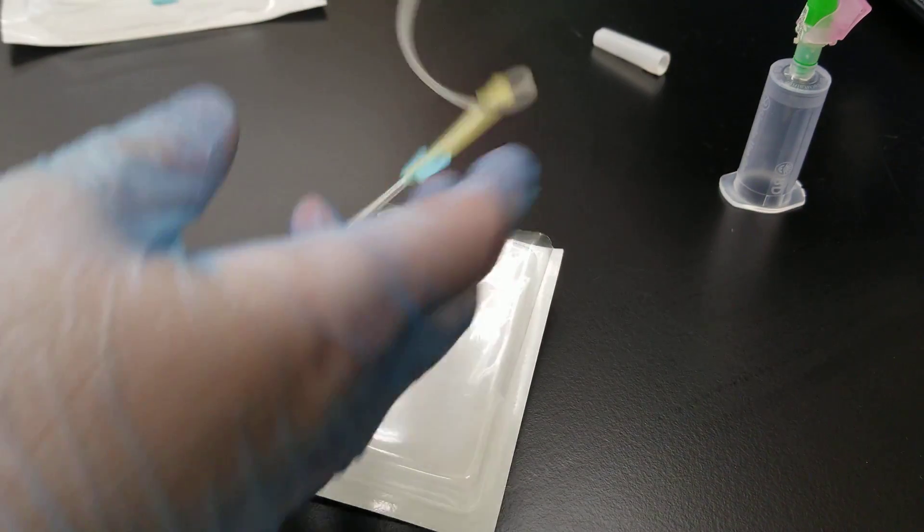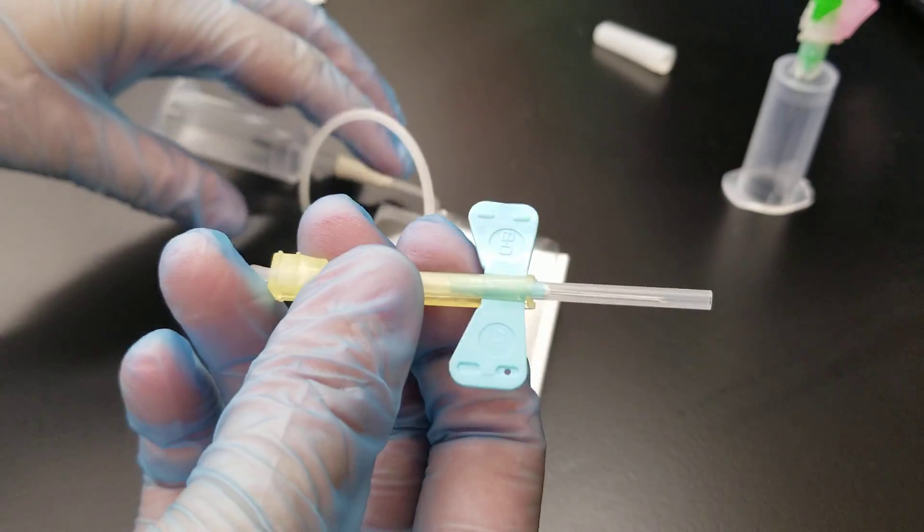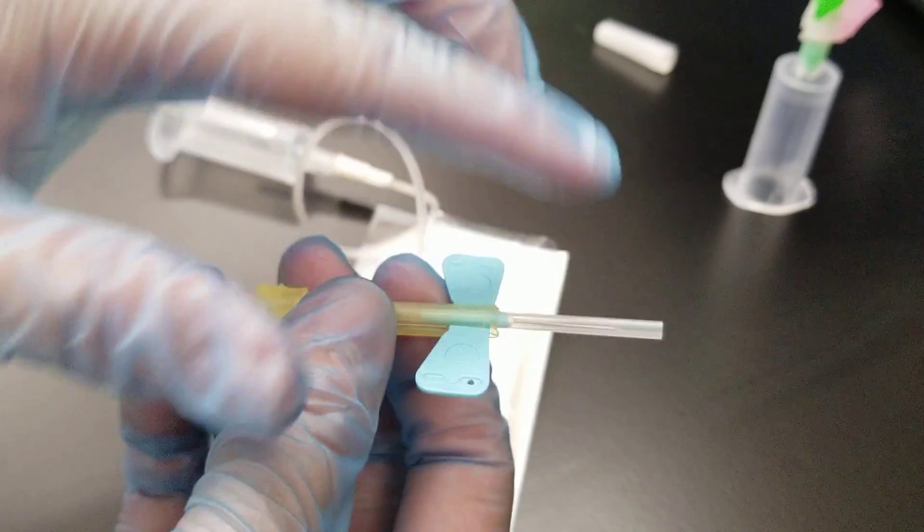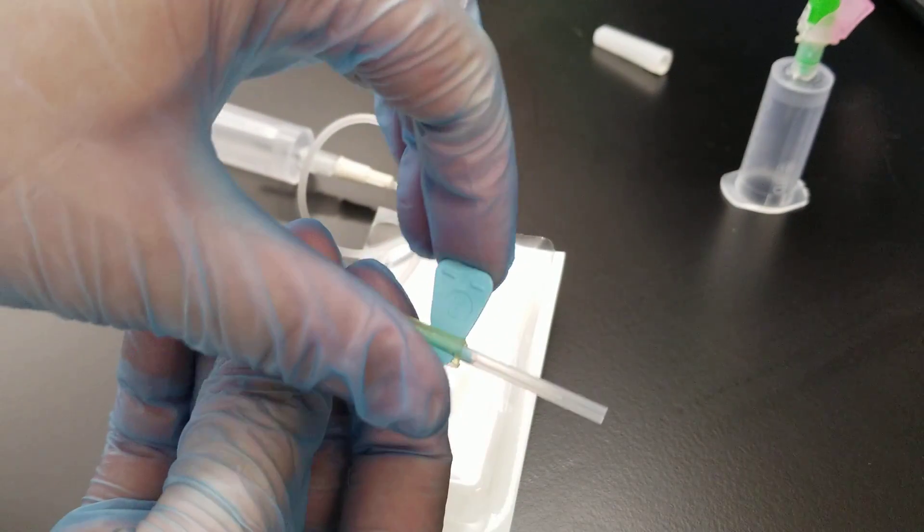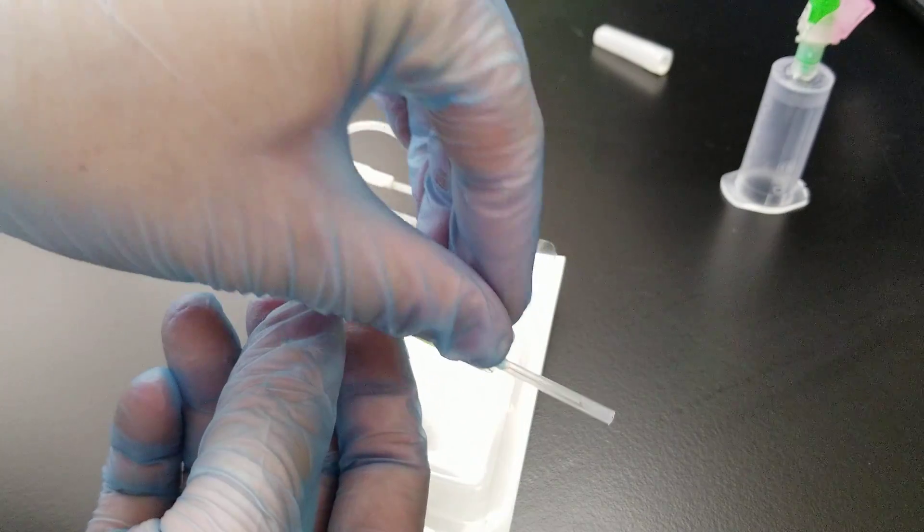When you go to perform the phlebotomy, the bevel is on the top. You'll hold the, you can hold the wings like this and do it that way.